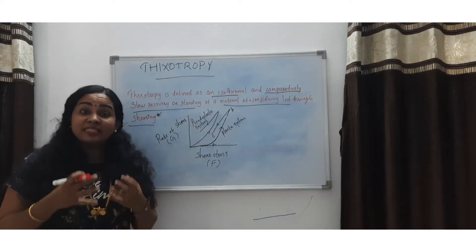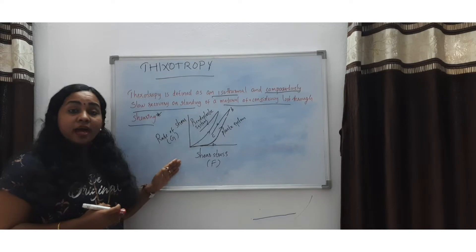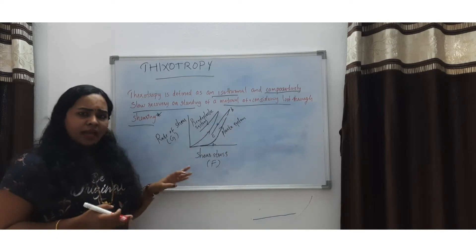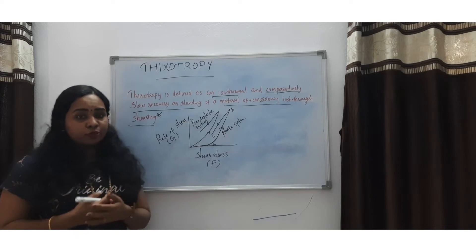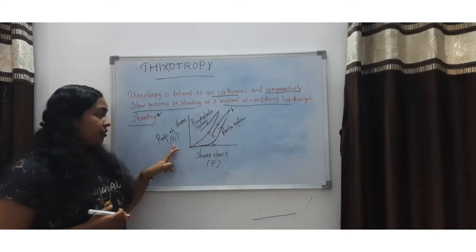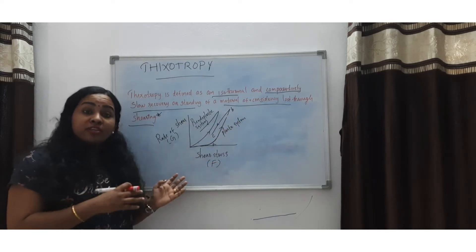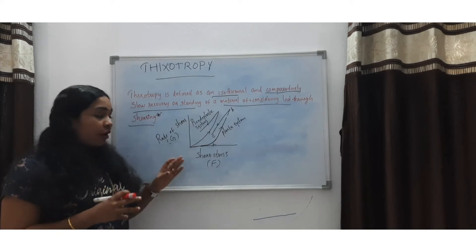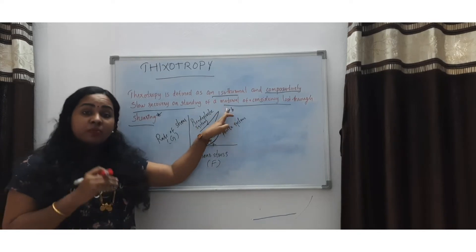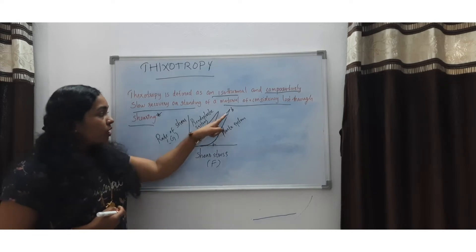Thixotropic behavior can be best explained by constructing a rheogram. In the rheogram, the rate of shear progressively increases with the shear stress, measured with the help of a suitable instrument. When these readings are plotted, we get the up curve AB. From the desired maximum shear rate at point B, if the shear rate then decreases, we will get the down curve BC.